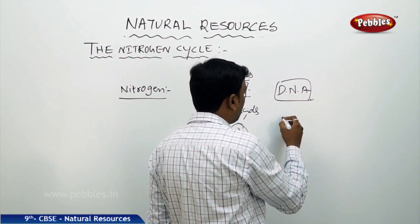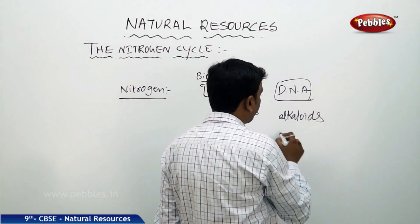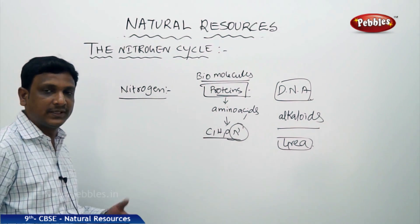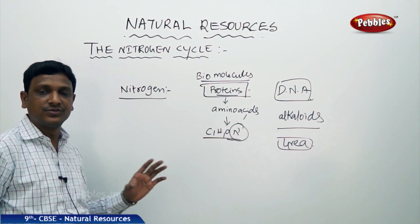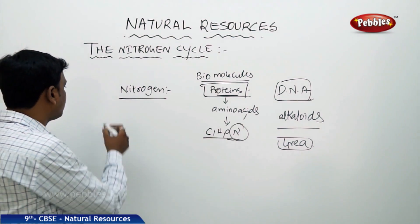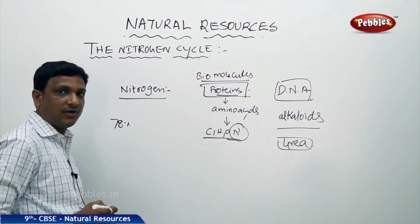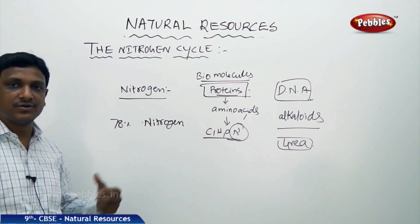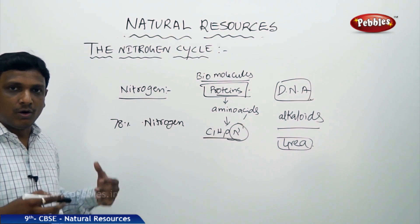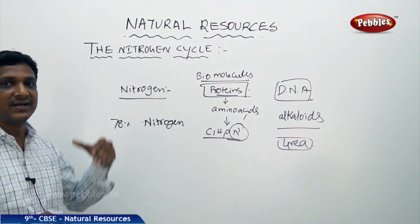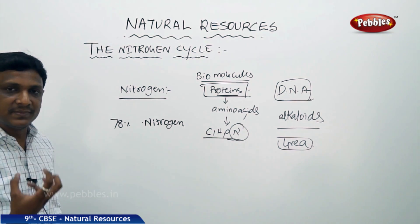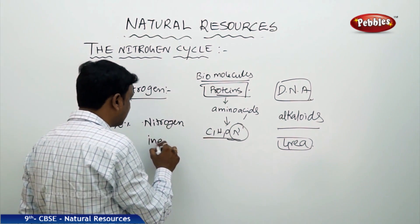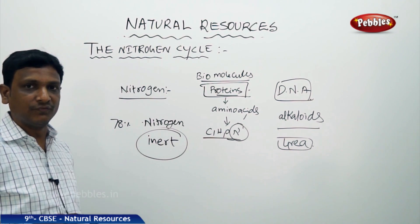Nitrogen is also helpful for plants to form certain compounds called alkaloids. Urea is the form which is useful for plants, and urea is a waste product in animals — but of course it is useful for the growth of plants. So nitrogen is found in all these essential bio-compounds. But where is this nitrogen? The nitrogen is there in the atmosphere — 78% of air is nitrogen. But even though there is a lot of nitrogen available, all living organisms — plants and animals — cannot use the atmospheric nitrogen directly. We take oxygen from the air directly by the lungs, but you cannot take nitrogen directly. Because in the molecular form, nitrogen is inert — non-reactive. So this inert form of nitrogen is not useful for plants and animals.